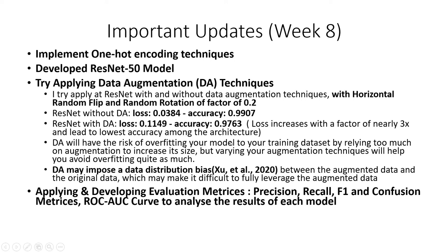If you use too much augmentation to increase the dataset size, it can cause issues, but if you choose the correct augmentation techniques it will help avoid overfitting. ResNet with data augmentation has lower accuracy than without data augmentation — the loss without augmentation is only 0.03, but with data augmentation the loss increased to 0.149.